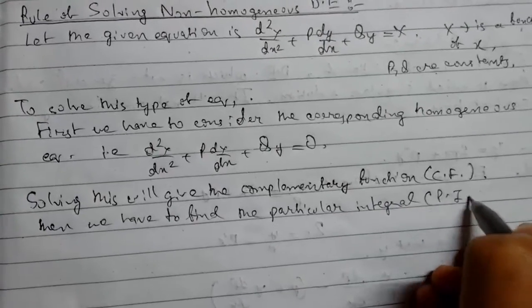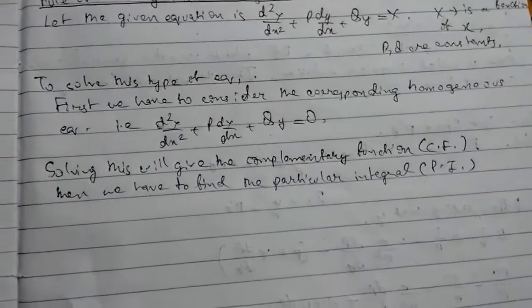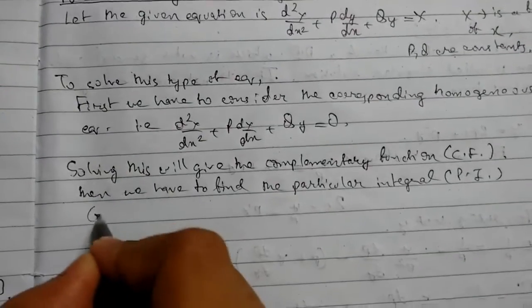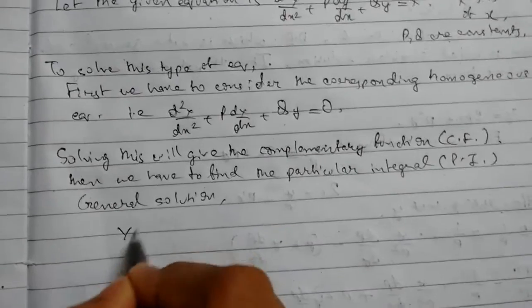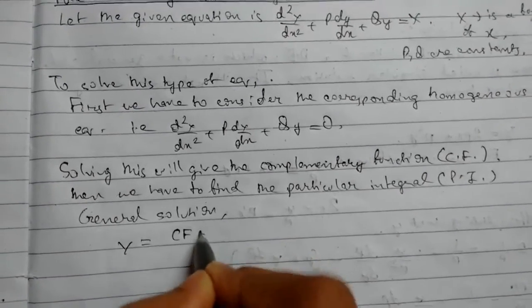That is PI, and lastly we will get the general solution as y equals CF plus PI.